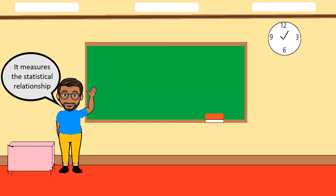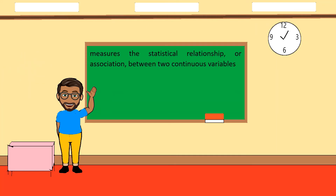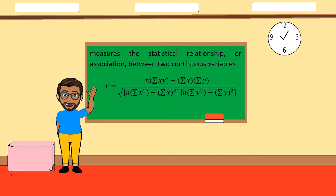Pearson correlation measures the statistical relationship between two variables. The formula is: r equals n times the summation of xy minus the product of the summation of x and the summation of y, all over the square root of the quantity [n times the summation of x² minus the summation of x squared] multiplied by [n times the summation of y² minus the summation of y squared].